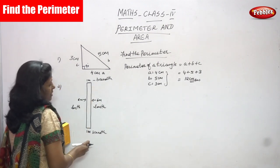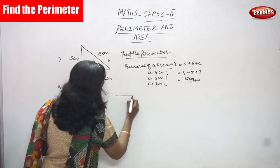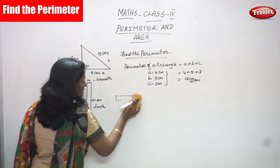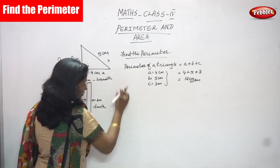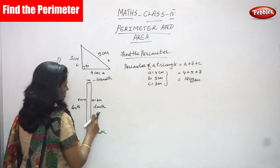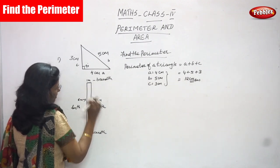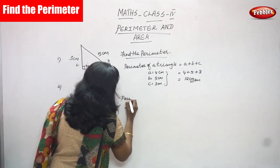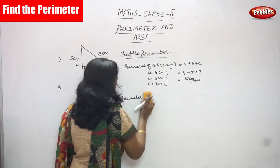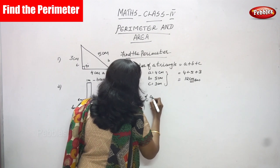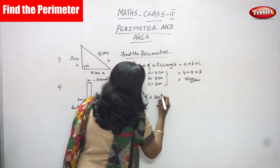This diagram is a rectangle shape — six meter length and one meter breadth. Now we are going to find the perimeter of the rectangle. The formula for the perimeter of a rectangle is: perimeter of a rectangle equals 2 into (l plus b).